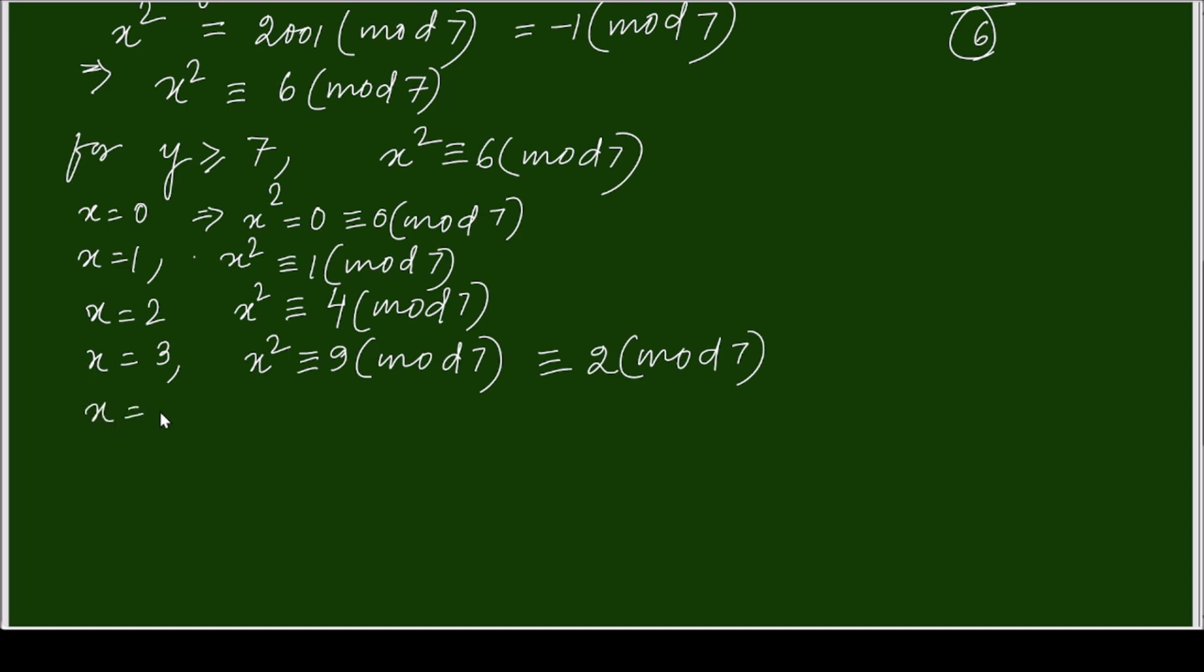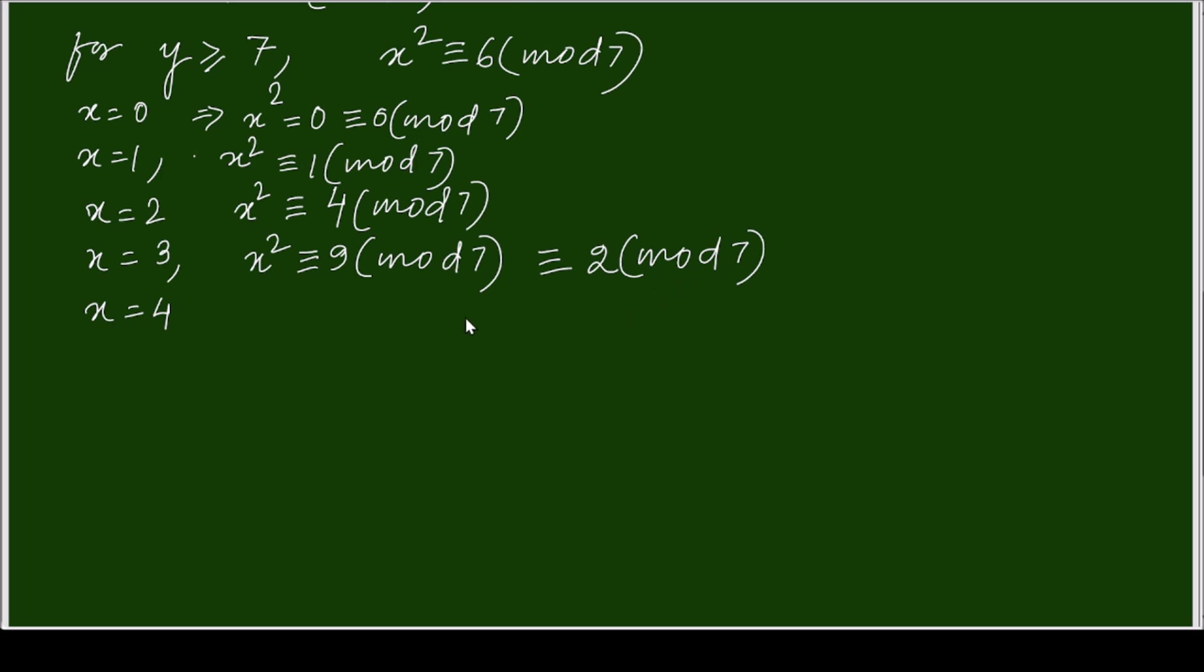Now x is equal to 4, it is 16, this is same as when x is equal to 3, it remains same. Because 3 plus 4 equals to 7, so x square is congruent to 16 modulo 7, so this is congruent to 2 modulo 7. That means it leaves remainder 2.